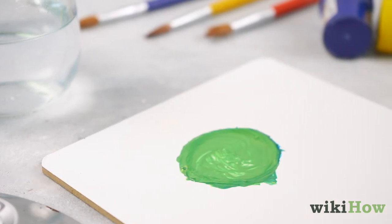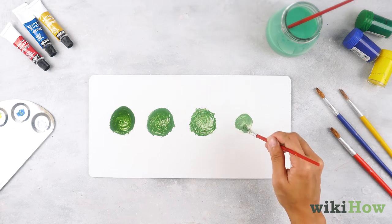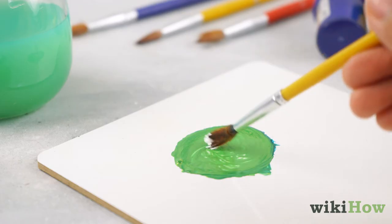For a lighter shade of green, add more yellow paint. You can also get lighter shades of green by mixing in white paint.